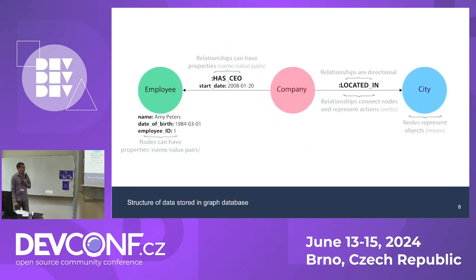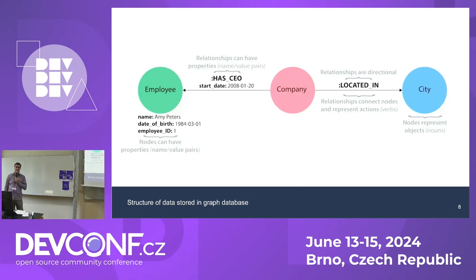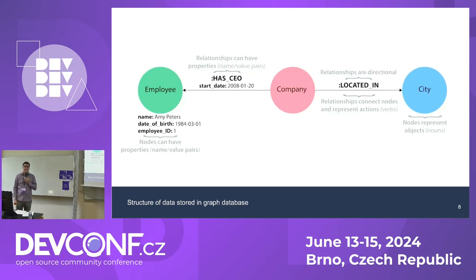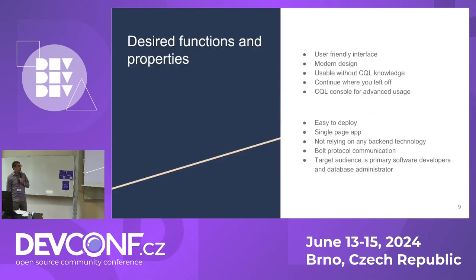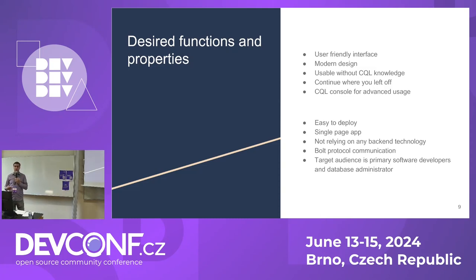If you look at the graph structure again, we have nodes and each node has a label. We can use the label as a table name, and the properties can be columns. So that means we have a table structure which we can use to visualize graph data. I was putting together a list of what I wanted to create: a tool that visualizes data in a table structure, and also something simple —